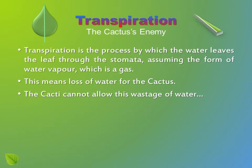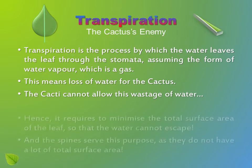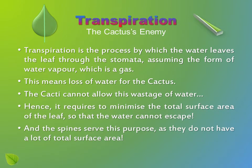Transpiration — the cactus's enemy. Transpiration is the process by which water leaves the leaf through the stomata, in the form of water vapor, which is a gas. But that means loss of water for the cacti, which it cannot allow. That's why it needs to minimize the total surface area of the leaf so that water cannot escape, and the spines do precisely that, as they do not have a lot of total surface area. You can see this for yourself in the two diagrams, where the one on the right is a magnified image of a spine and the one on the left is that of a normal leaf.